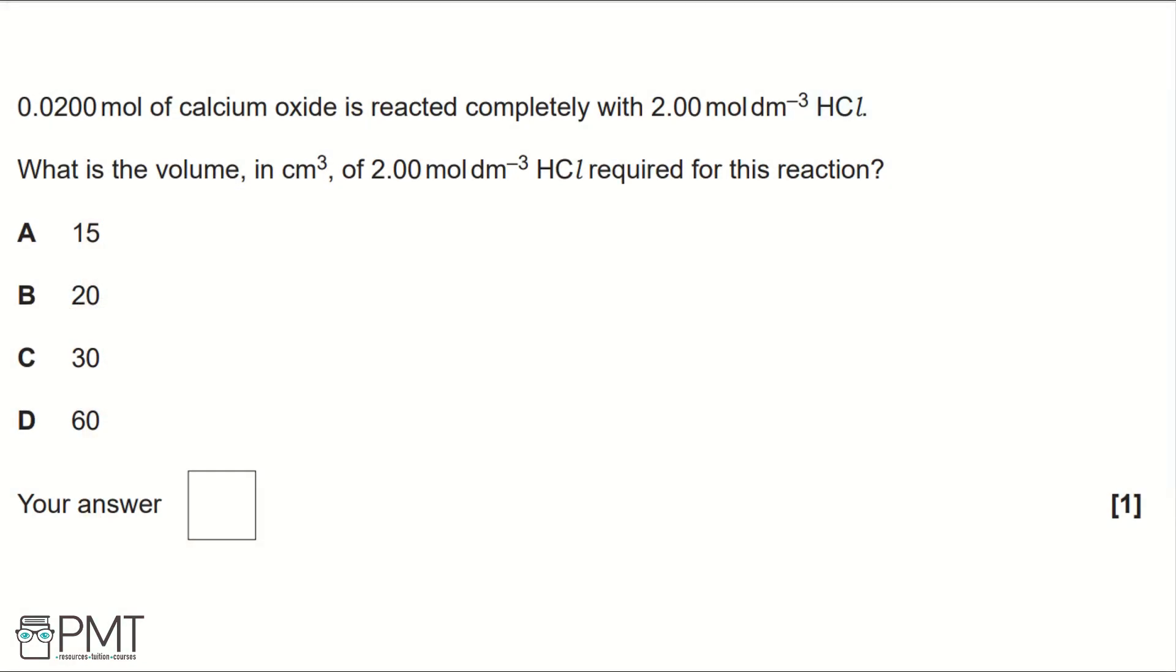0.02 moles of calcium oxide is completely reacted with 2 moles per decimetre cubed of hydrochloric acid. What is the volume in centimetres cubed of 2 moles per decimetre cubed hydrochloric acid required for this reaction?